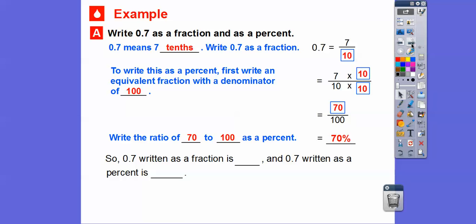So 0.7 written as a fraction is 7 tenths, and then 0.7 written as a percent is 70 percent. Easy enough, huh?